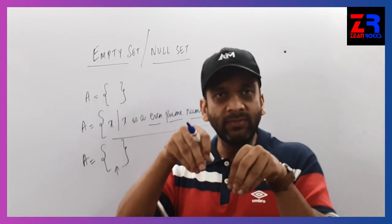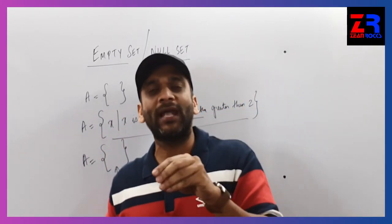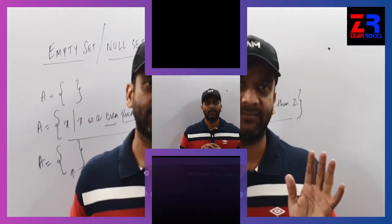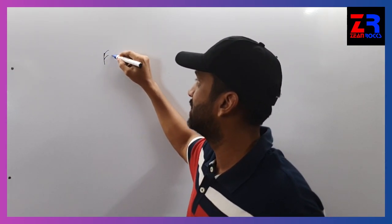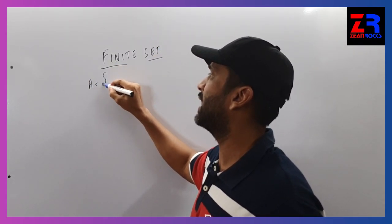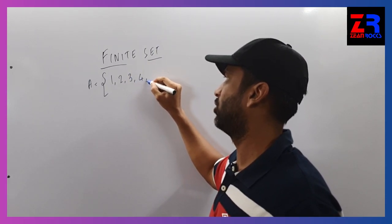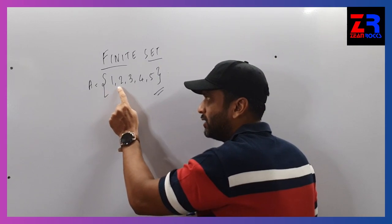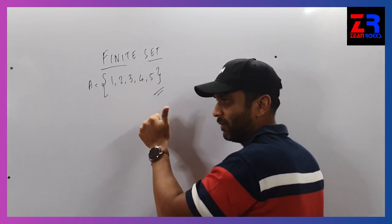That set is called an empty or a null set. The next concept is finite set and an infinite set. A finite set may be a null set or a singleton set, or the elements in the set must be countable - elements we can count. For example, A = {1, 2, 3, 4, 5} - countable, finite set.